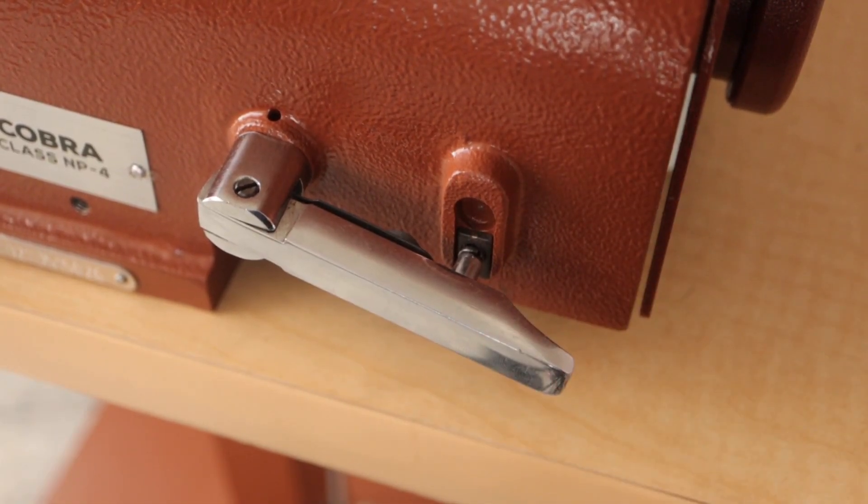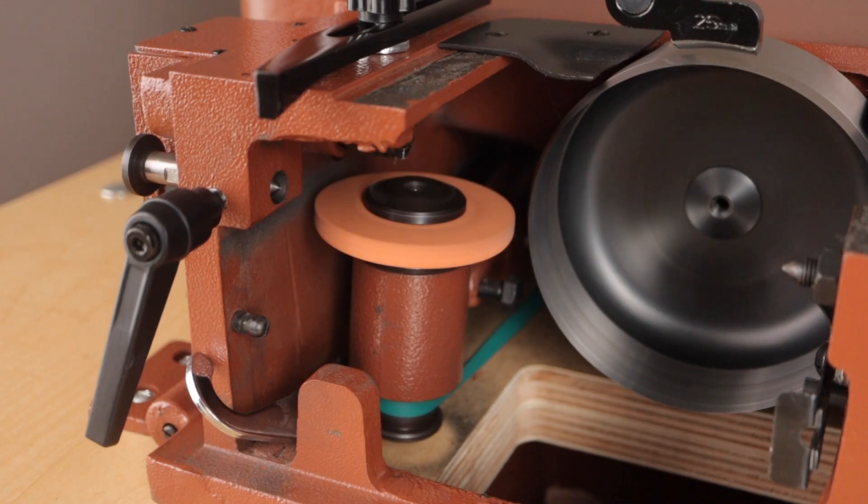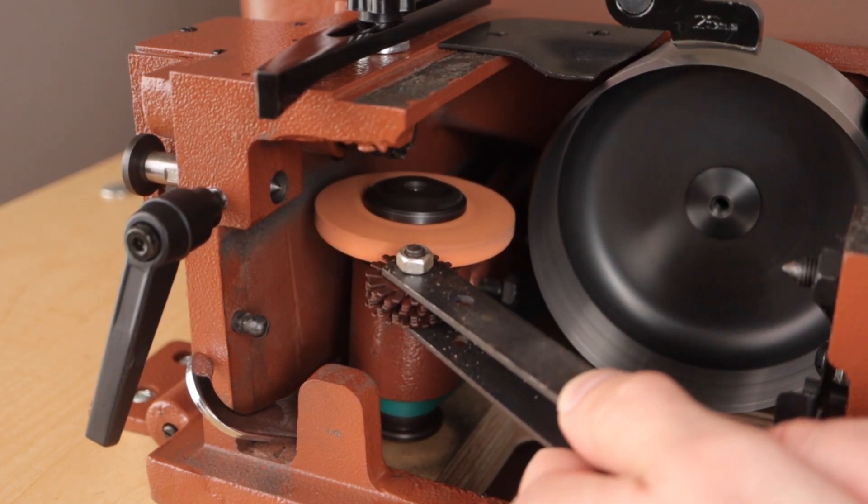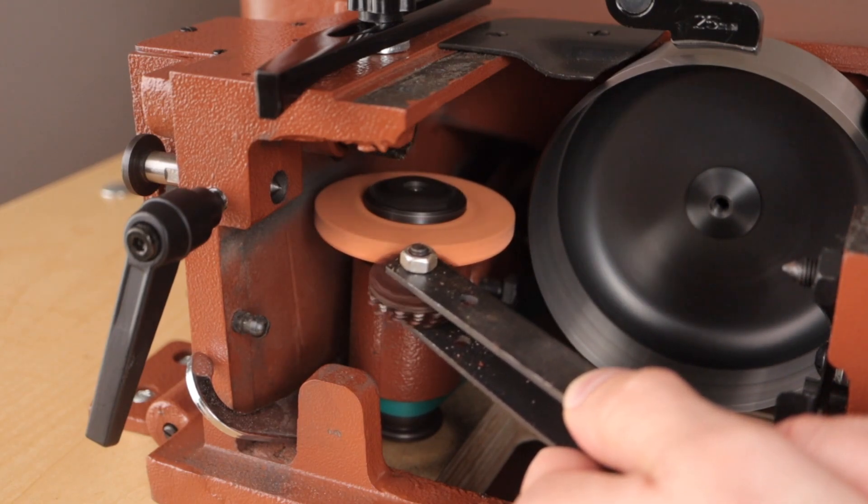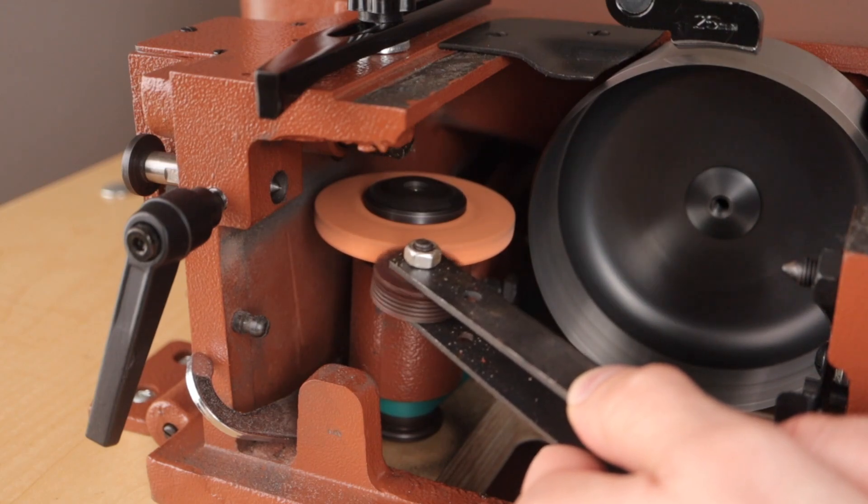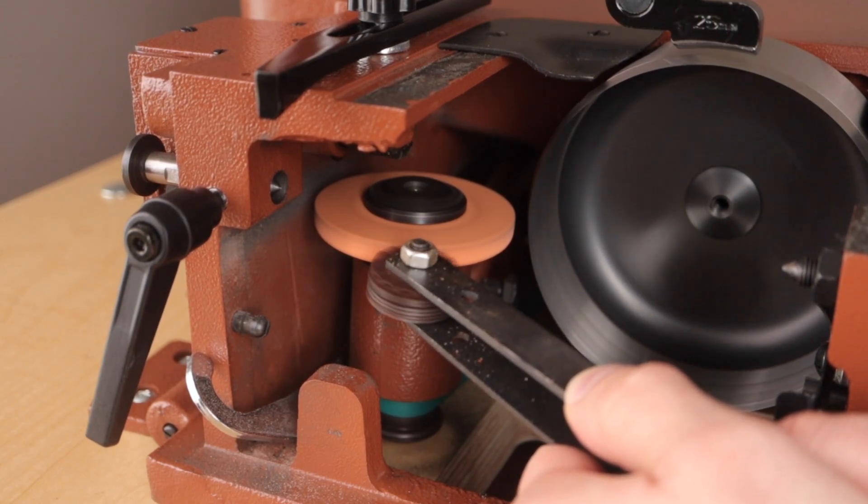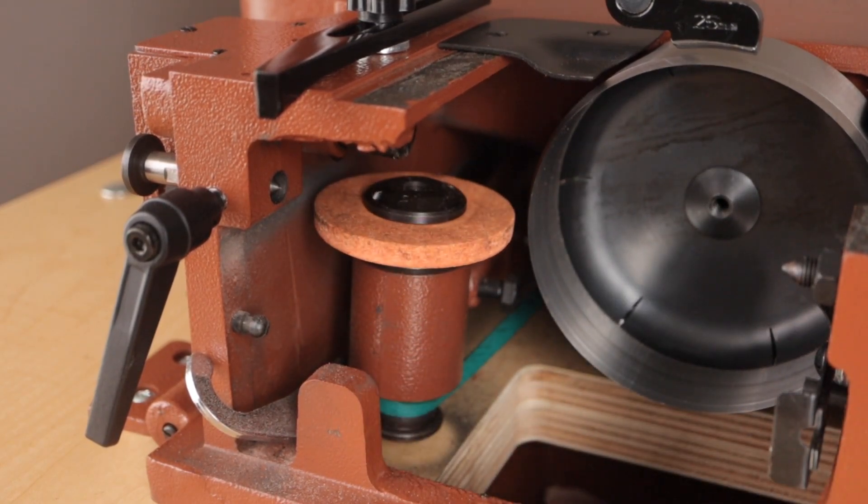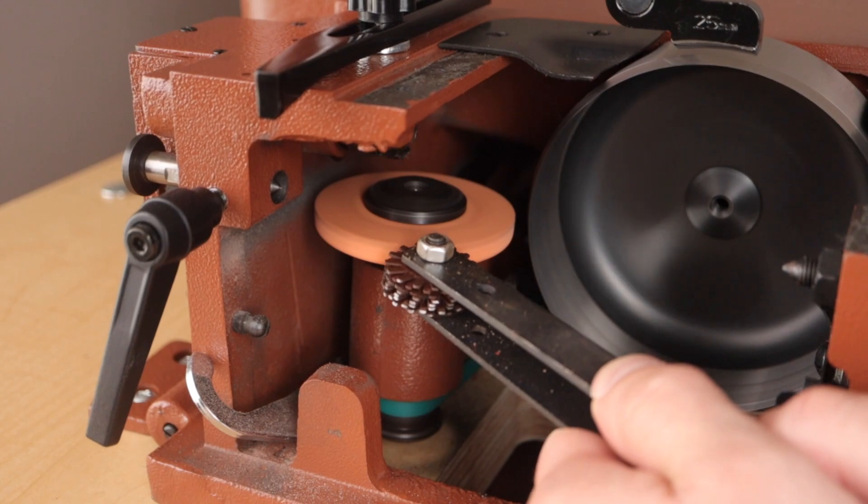Unlatch the sharpening stone lever and engage the foot pedal. Once you're up to speed, lightly press the grindstone dresser tool against the sharpening stone and hold it there to clean the side. Check the progress. If it needs a little bit more cleaning, then repeat the process.